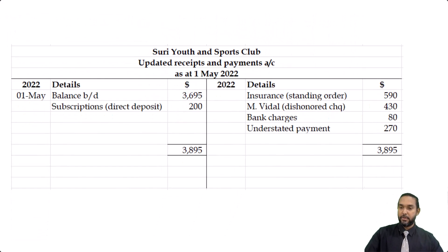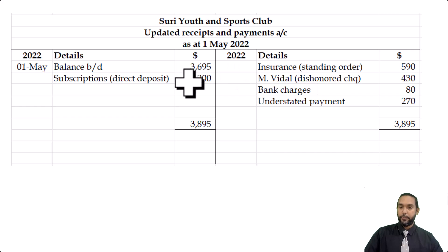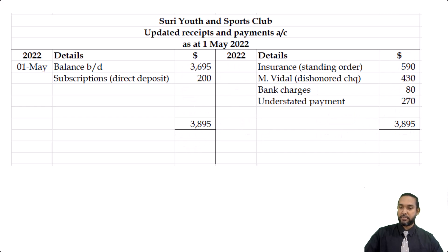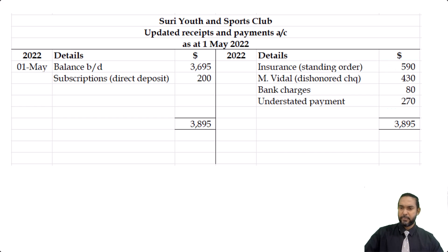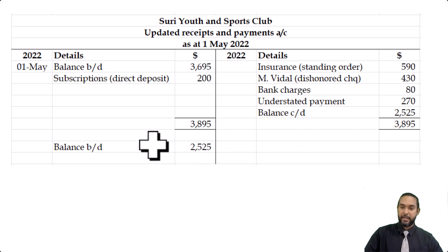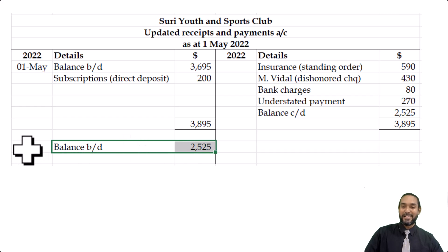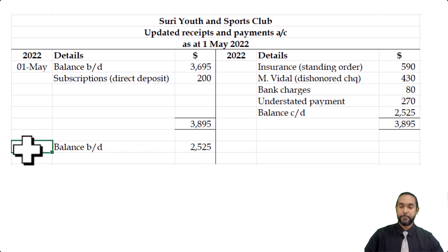Now all we have to do is balance it off. 3,895 is the larger of the two totals. When you add up the credit-side items, you get approximately 1,370. Subtracting that gives you 2,525, which you bring down on the debit side. So that is your updated receipts and payments account balance.